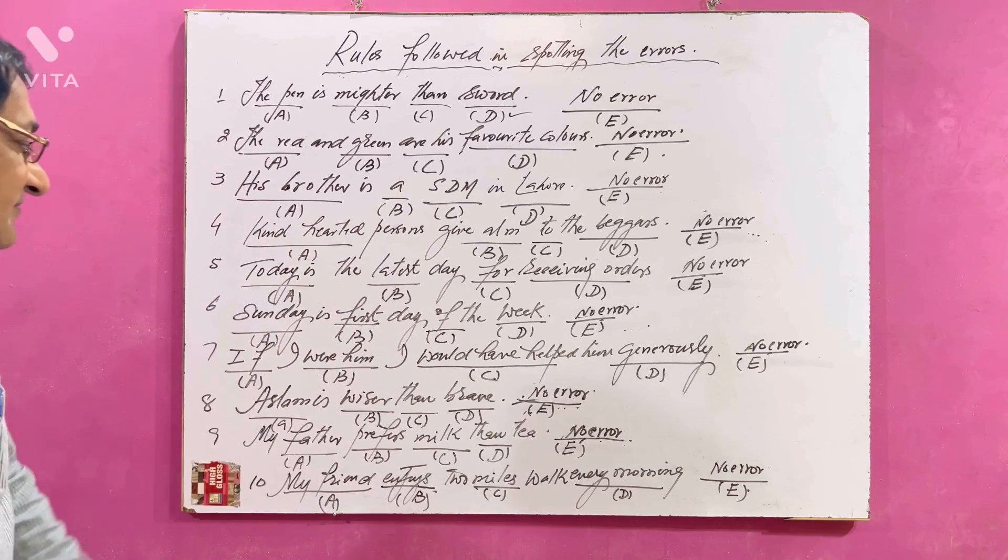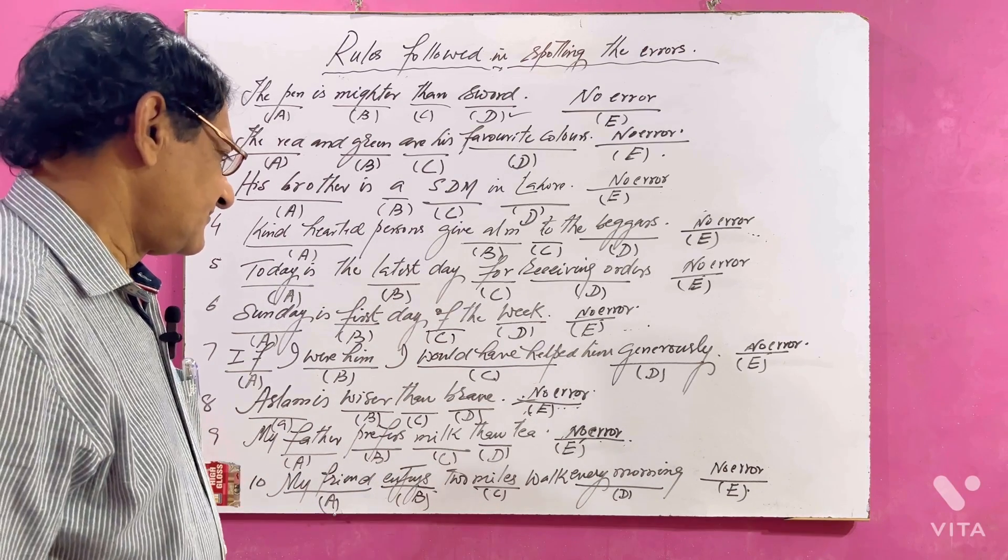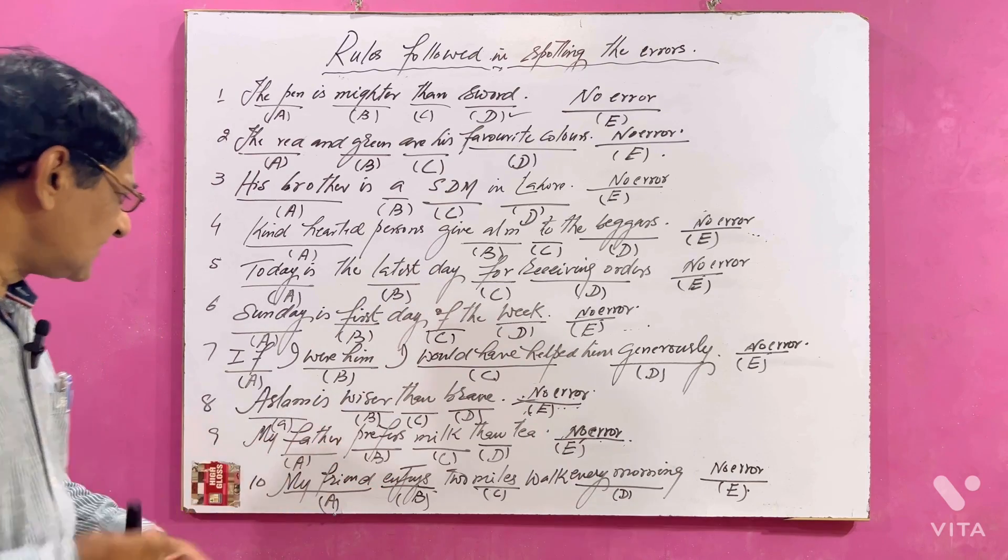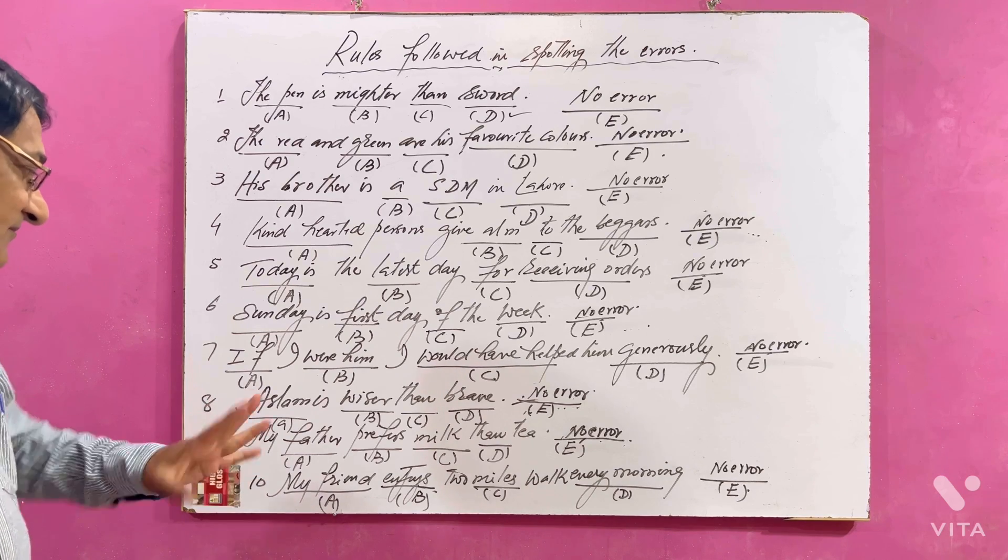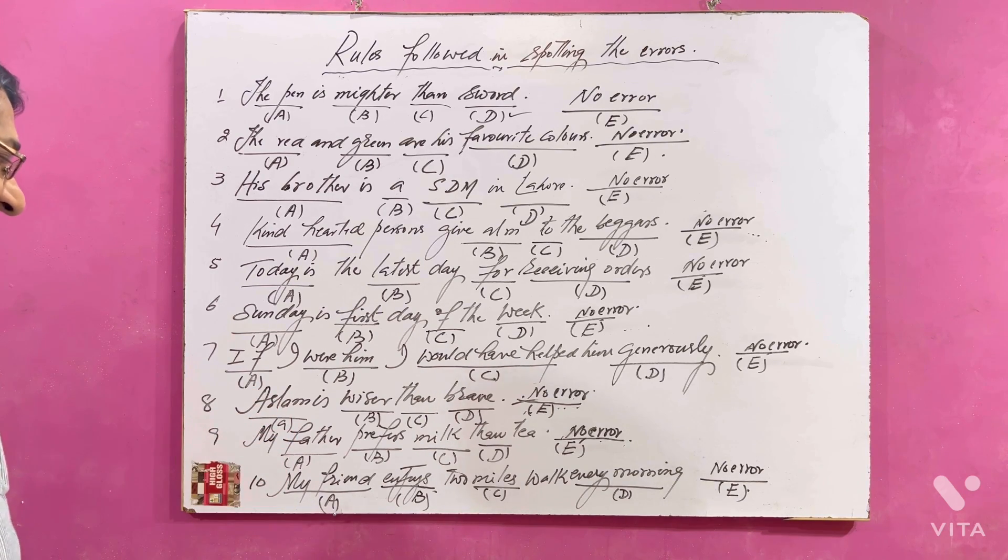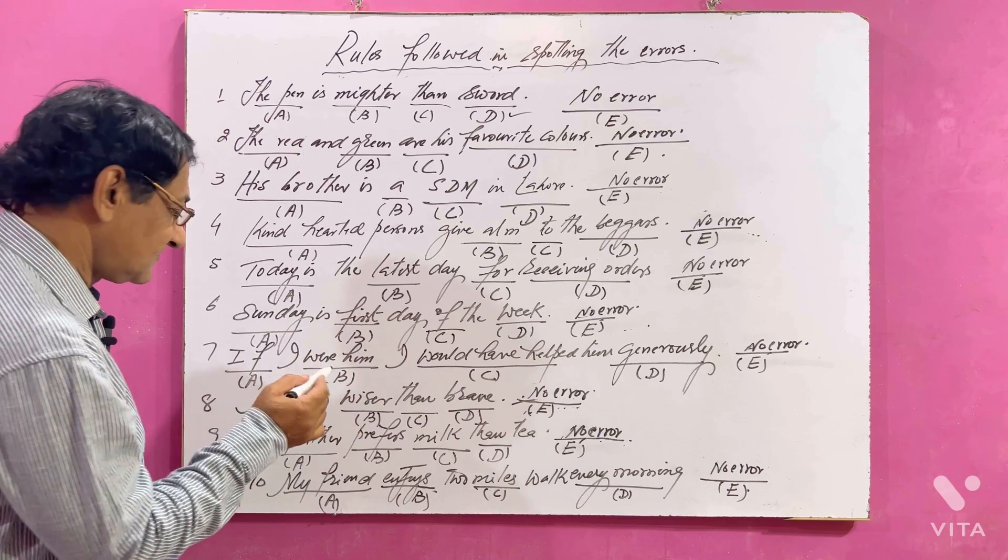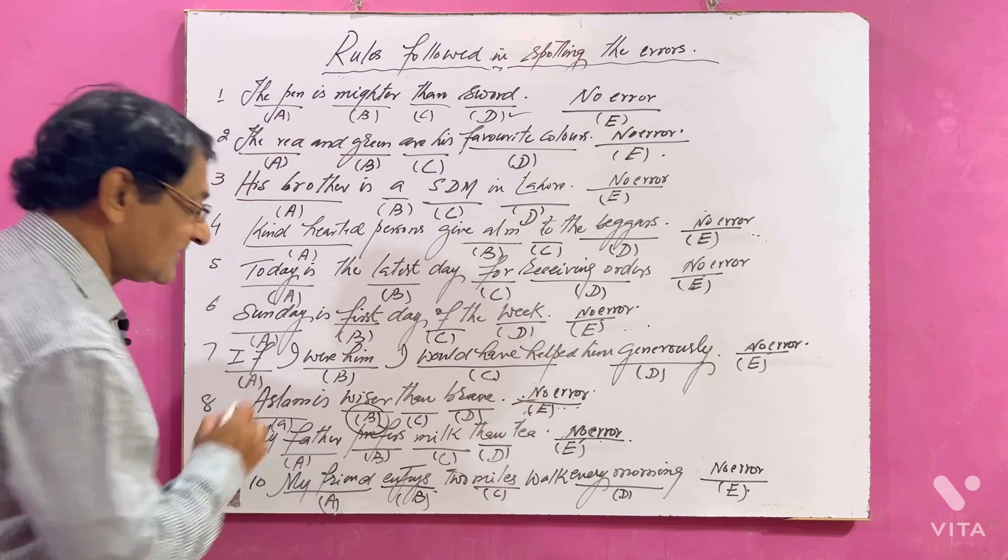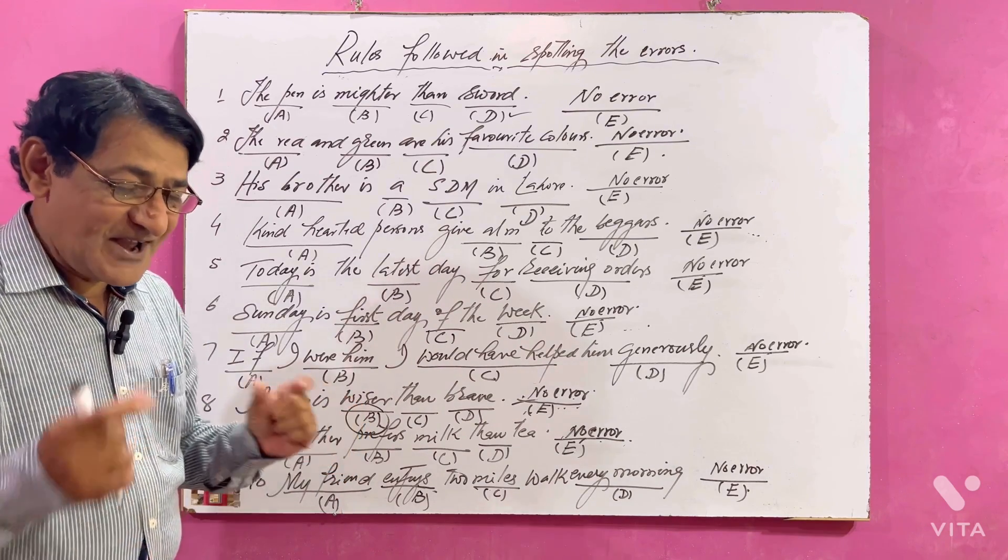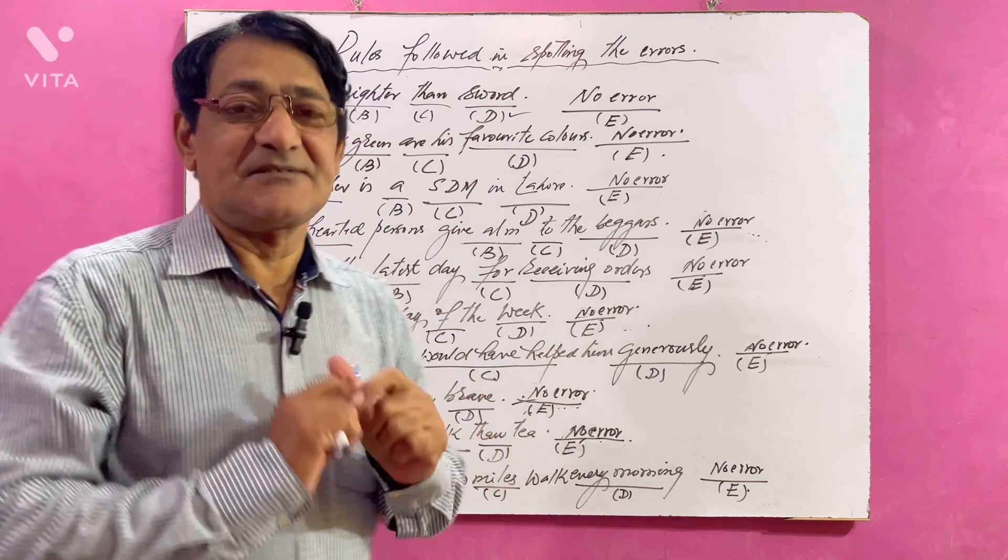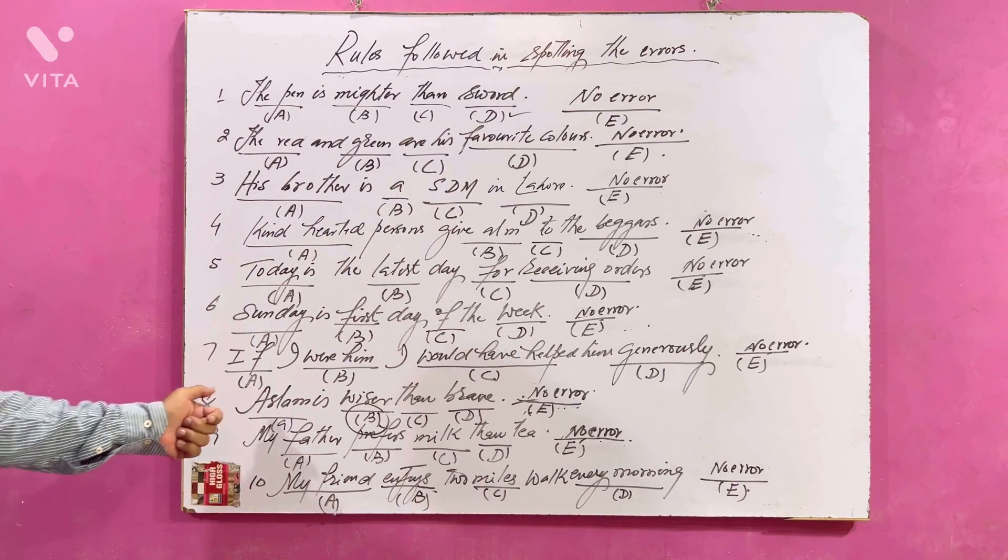Number eight: Aslan is wiser than brave. Where is the mistake here? Here B is incorrect. We can't use ER comparative form of adjective while comparing two qualities in the same person. What we have to do? Aslan is more wise than brave, because we are comparing two qualities of the same person.